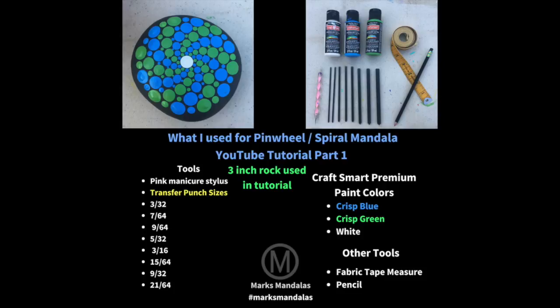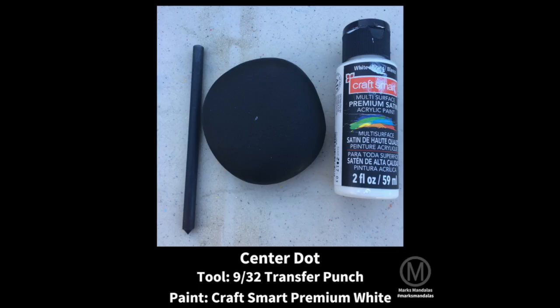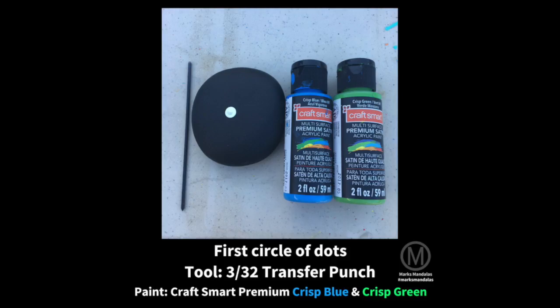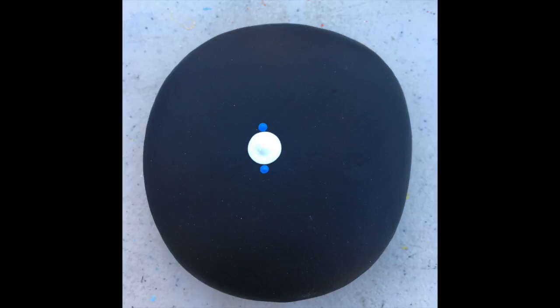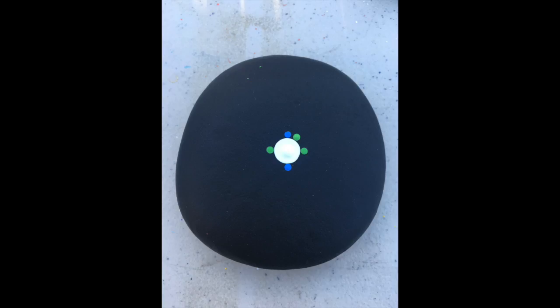For this tutorial I used a 3 inch rock and I'm showing measuring it and putting the spot for the center dot. Like the last tutorial and future tutorials, I'll be putting the tool and paints used for each successive circle of dots.